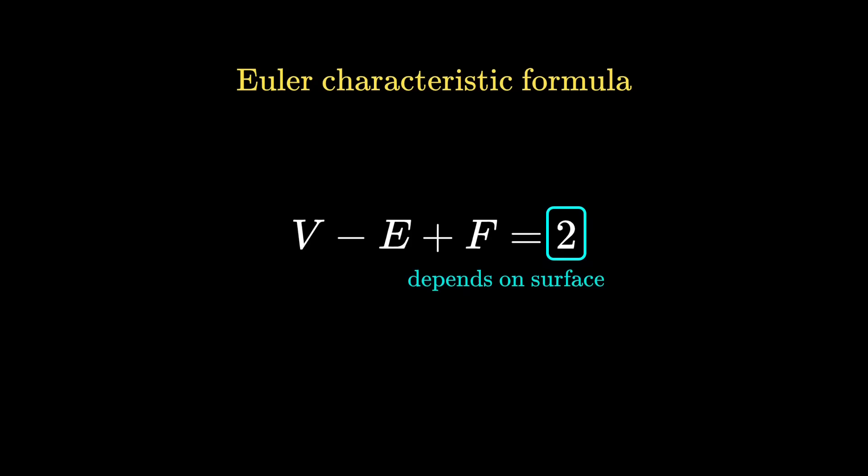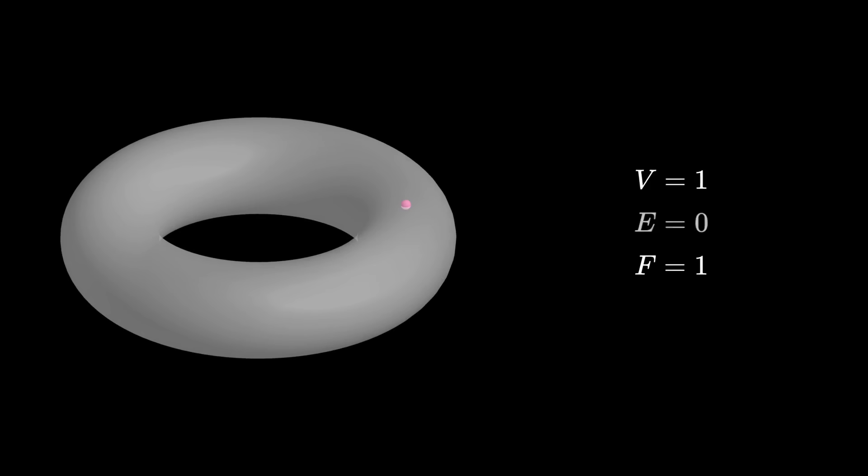However, the right hand side really depends on the surface you draw the graph on. It's 2 on a plane, and if you draw the graph on a torus, it can still be 2, but it's not always 2.